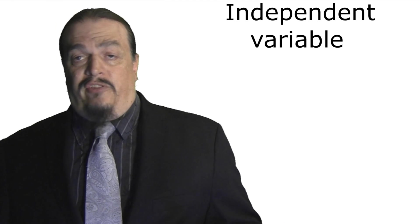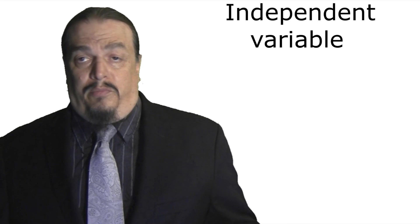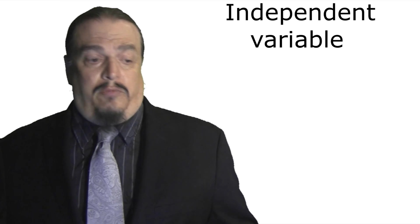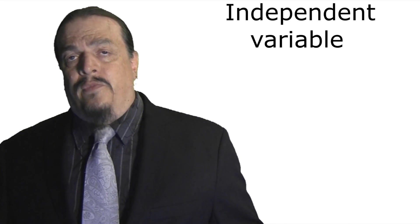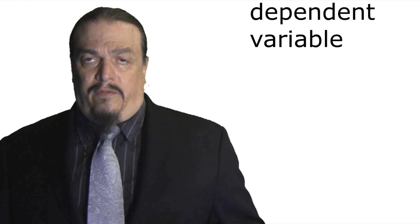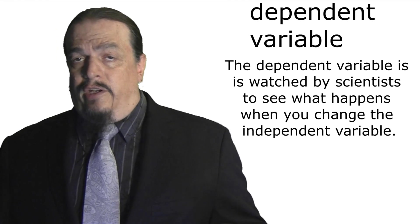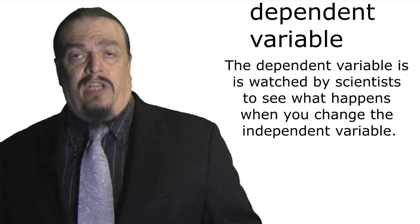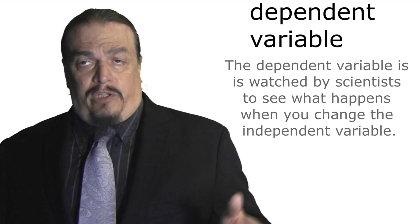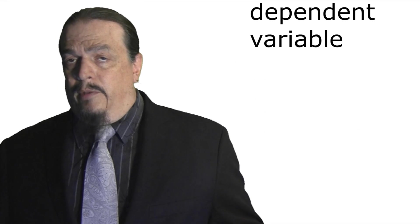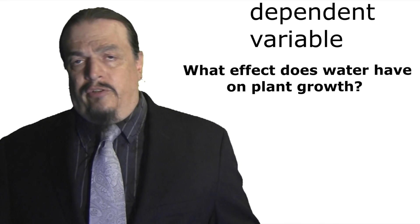For example, you wouldn't put your plants in different locations with different amounts of light, because you won't be able to determine what caused the change — the amount of water or the amount of sunlight. Which brings us to the dependent variable. The dependent variable is watched by scientists to see what happens when you change the independent variable. The dependent variable in the plant experiment is the plant growth we asked about in our original question.